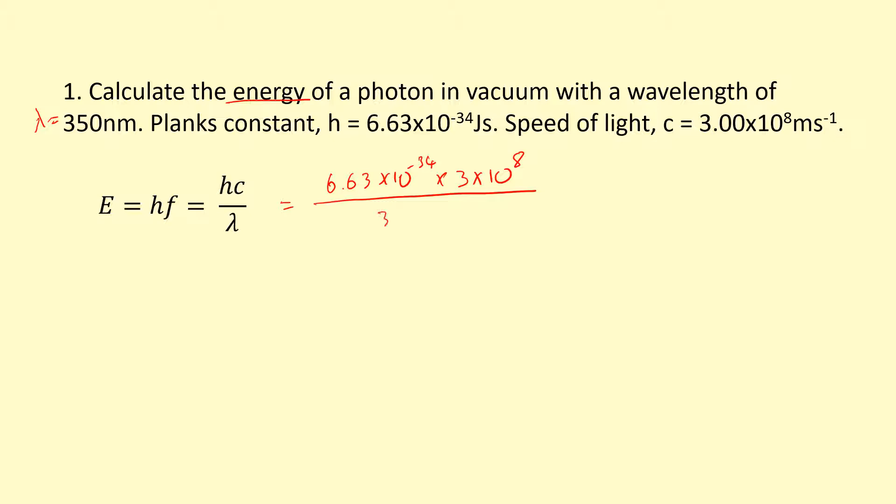Divide that by the wavelength, 350 times 10 to the power of minus 9 to turn that into meters. And that gives me 5.68 times 10 to the power of minus 19 joules.